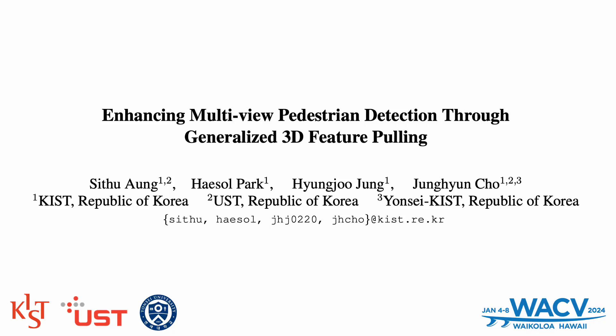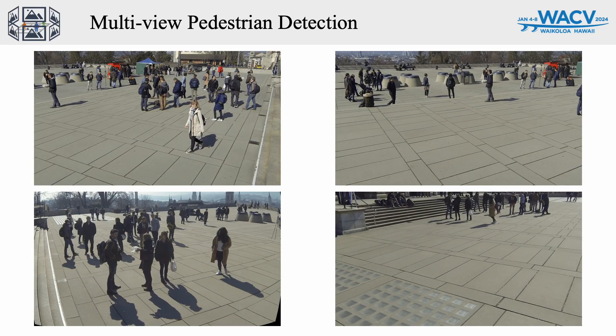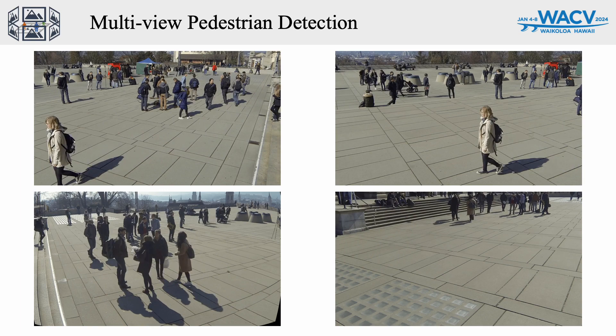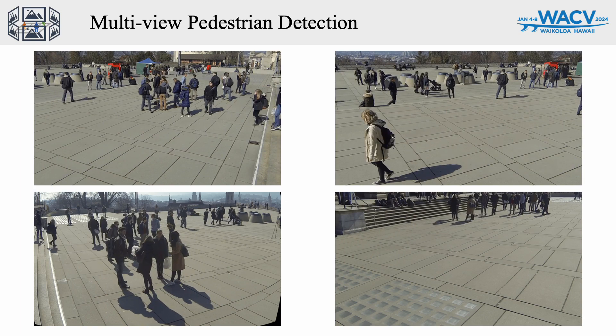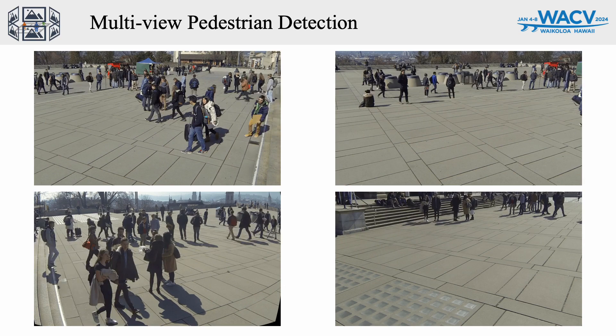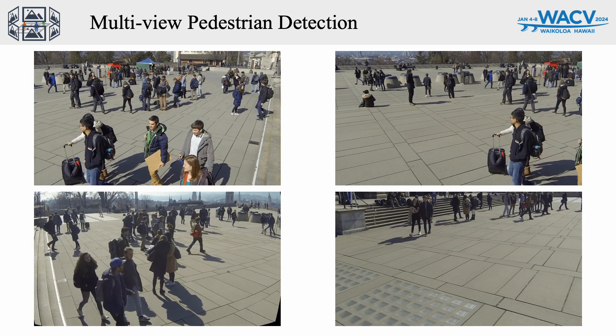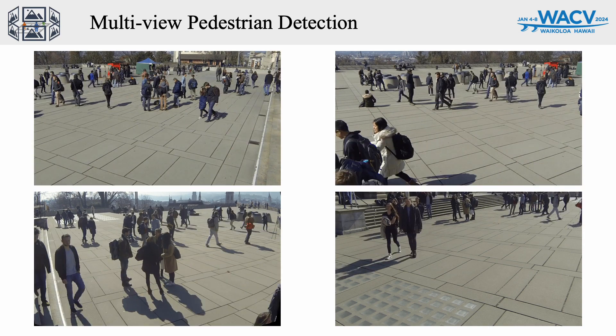In this video, we are going to introduce a new method for multi-view pedestrian detection called multi-view feature pulling, that leverages a 3D feature pulling mechanism with new improved modules. The main goal of this project is to effectively detect and associate the dense pedestrians within a scene utilizing the images from multiple cameras. This is a challenging task given the dense nature of the problem and sparsely located cameras.